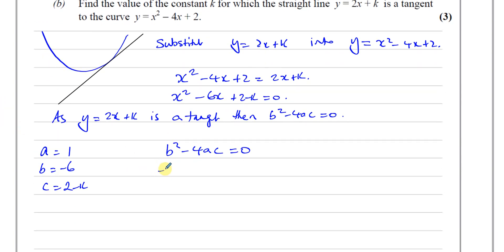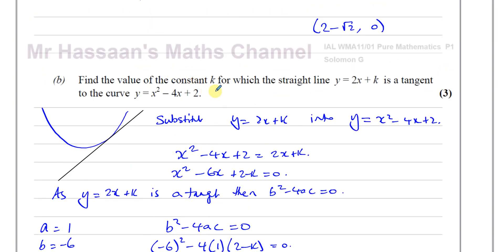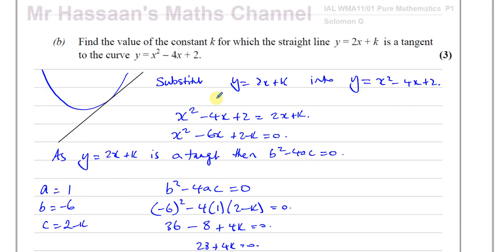So the discriminant: negative 6 all squared minus 4 times 1 times (2 minus k) equals 0. That gives 36 minus 8 plus 4k equals 0, so 28 plus 4k equals 0. Therefore 4k equals negative 28, so k equals negative 7. That's the value of k for which the line is a tangent to the curve. That's method 1.